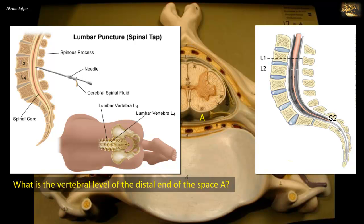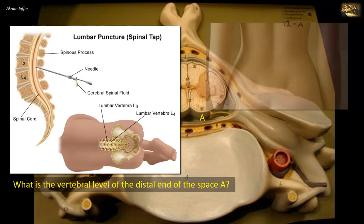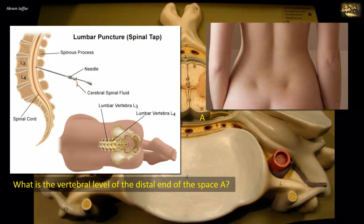At the same time, spinal nerve roots forming the cauda equina are floating in cerebrospinal fluid and will be pushed out of harm's way if touched by the aspirating needle. So it is safe to perform a lumbar puncture through the lumbar cistern. On the surface of the body, the level of S2 where the lumbar cistern terminates is indicated by the two skin dimples on the lower back — one on either side in the sacral region — which represent the posterior superior iliac spines, lying at the level of S2.